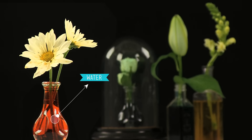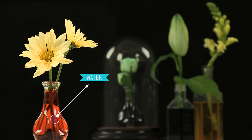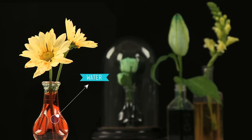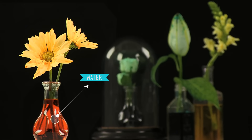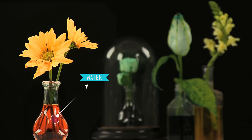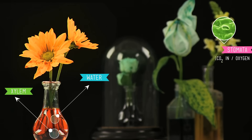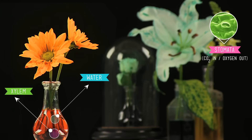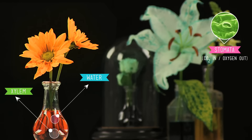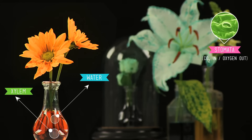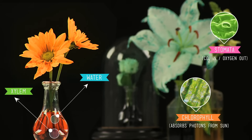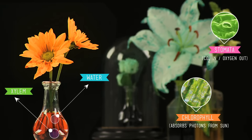First, water. Let's assume that we're talking about a vascular plant — that's the kind of plant that has pipe-like tissues that conduct water, minerals, and other materials to different parts of the plant, like trees and grasses and flowering plants. The roots absorb the water and bring it to the leaves through tissues called xylem. Carbon dioxide gets in and oxygen gets out through tiny pores in the leaves called stomata. And finally, individual photons from the sun are absorbed in the plant by a pigment called chlorophyll.